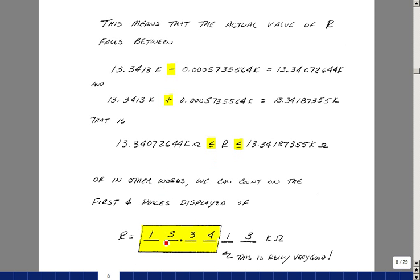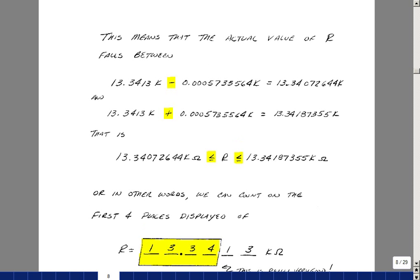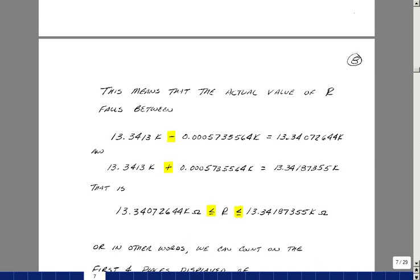So it's a much tighter range than the 5% tolerance on the resistor. If you look at both these numbers, the first four digits are identical, so I can be assured that at least I have this much accuracy in my reading.